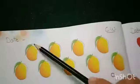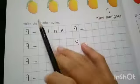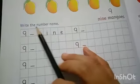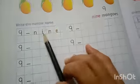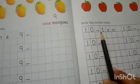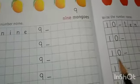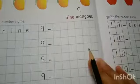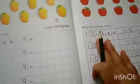Write down date and classwork. Write the number name, number 9 and number 10. Before we start writing, let's see some examples of number 9 and number 10.